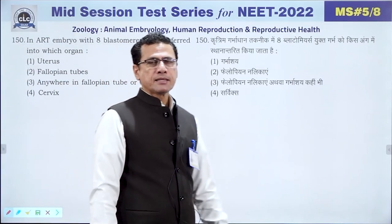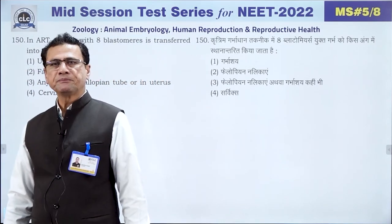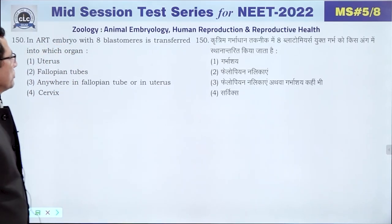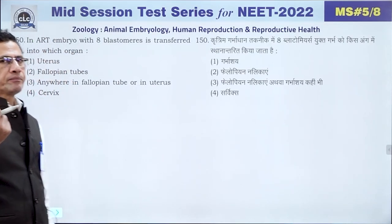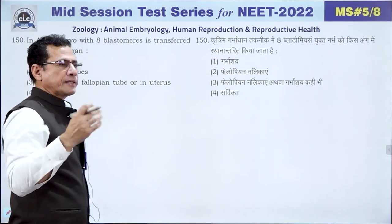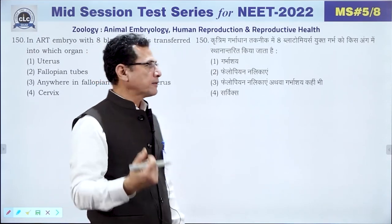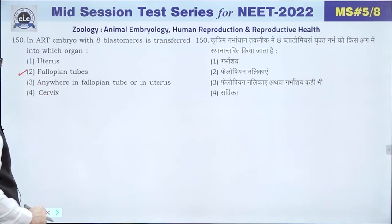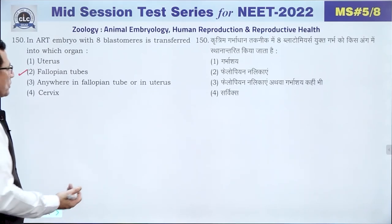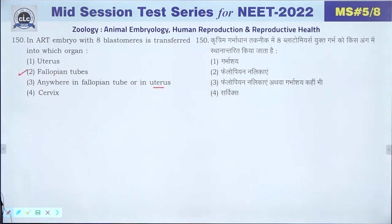Question 150: In ART (Assisted Reproductive Technologies), an embryo with 8 blastomeres is transferred into the fallopian tube. If more than 8 cells, it is transferred into the uterus. This is a direct NCERT question. The answer is 2 — fallopian tube.